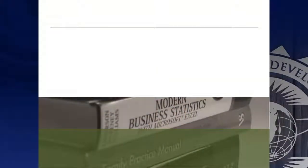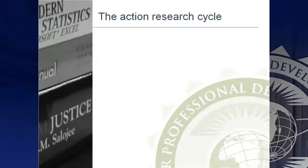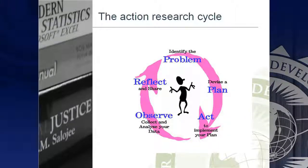The action research cycle starts with identifying the problem you want to solve or the innovation you want to introduce, and then you go through four steps. You've got to develop a plan — if I want to solve a problem, I've got to have a plan. You then have to act on your plan. It doesn't help to have all these wonderful New Year's resolutions if you never get around to actually doing something about it. You've got to start acting and implement your plan.